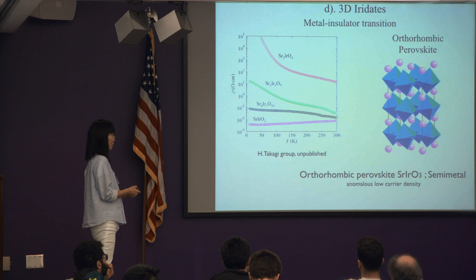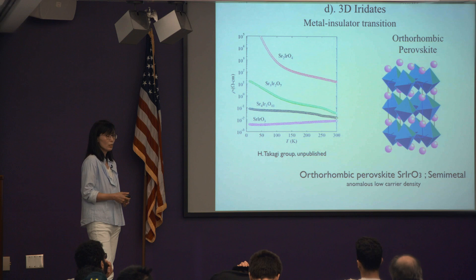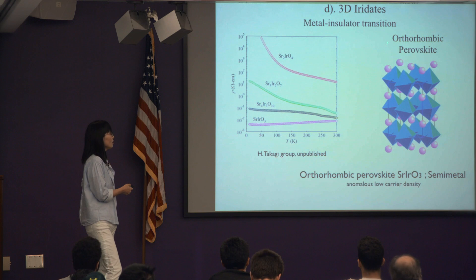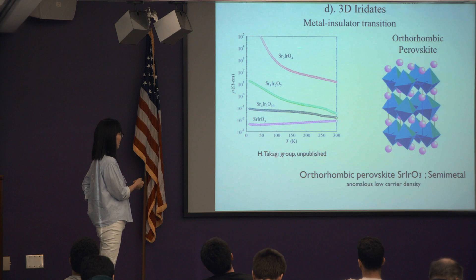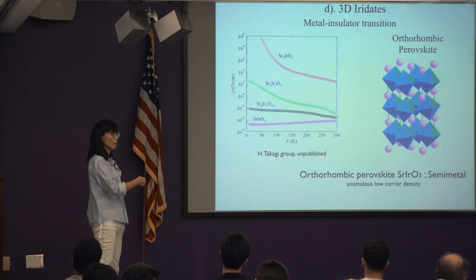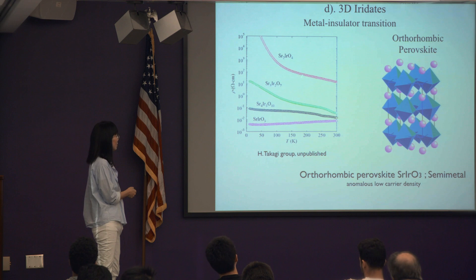In 2D we have a system where spin-orbit coupling and a non-symmorphic lattice protect a Dirac point despite the spin-orbit coupling. In 3D something richer can happen. The 3D iridates — strontium iridates — come in layers, similar to high-Tc cuprate structures. Sr₂IrO₄ is isostructural to La₂CuO₄. You can add two layers, three layers, and in the infinity-layer limit (the 3D system) it's the 1-1-3 structure.